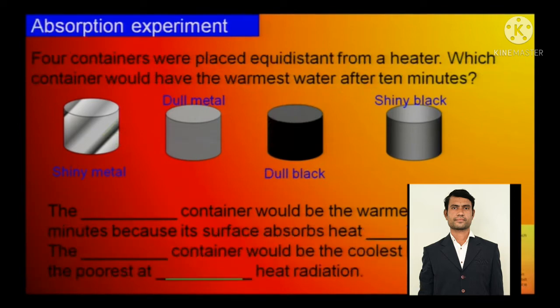Absorption experiment. The four containers were placed equidistant from a heater. Which container would have the warmest after 10 minutes? Shiny metal, dull metal, dull black and shiny black, the options are again same. The dull black container would be the warmest after 10 minutes, because its surface absorbs heat radiation the best. The shiny metal container would be the coolest, because it is the poorest at absorbing heat radiation.